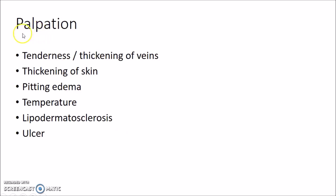Now for palpatory findings, you need to palpate for tenderness or thickening of the veins. Other palpatory findings include thickening of skin, pitting edema, and temperature — you need to palpate for temperature rise. You need to palpate for lipodermatosclerosis, which is progressive sclerosis of the skin and subcutaneous tissue. You also need to palpate the ulcer. A venous ulcer is also known as a stasis ulcer; it will usually be present in the lower one-third medial side of the leg, with a well-defined margin, the floor usually being the deep fascia, and associated with pigmentation, eczema, and varicosity in the surrounding area.